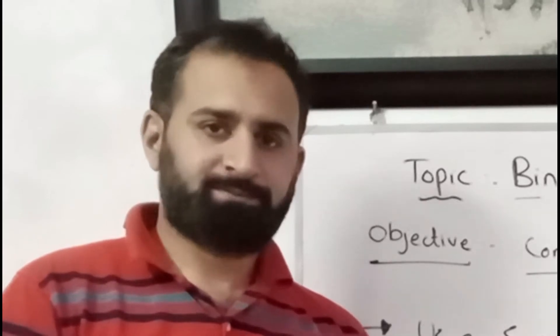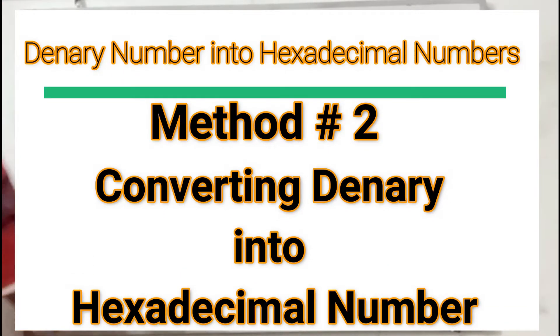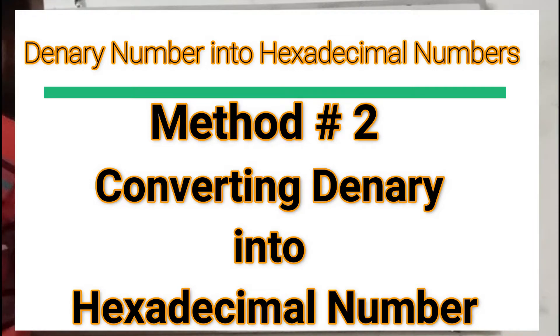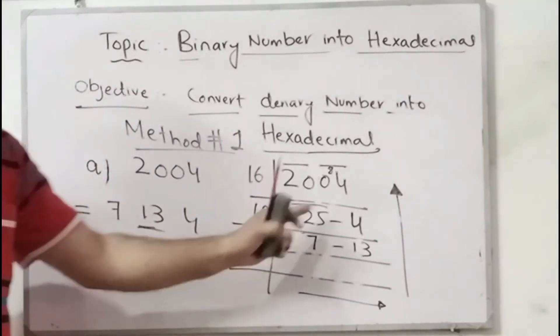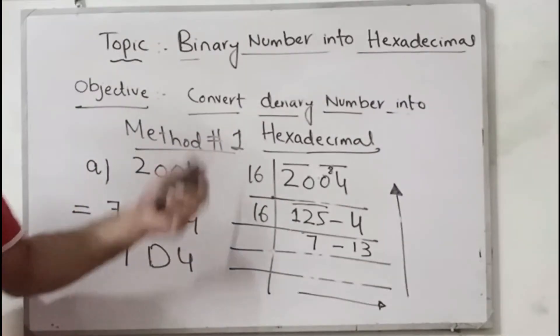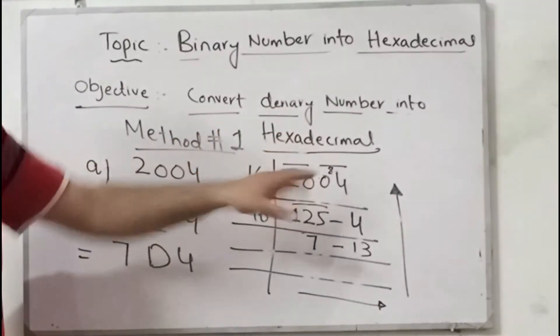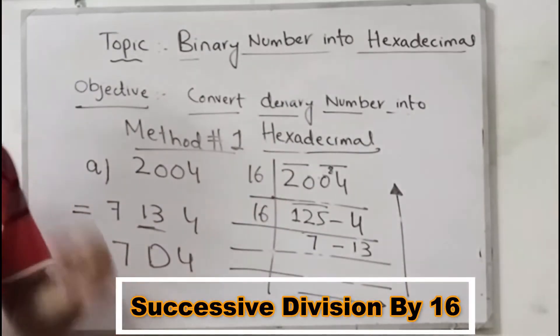Assalamu alaikum everyone. Here we are going to convert any number into a hexadecimal number. This is called Method Number One, using successive division. This is the way of converting a decimal number into hexadecimal using successive division. Now, Method Number Two is what we will cover next.